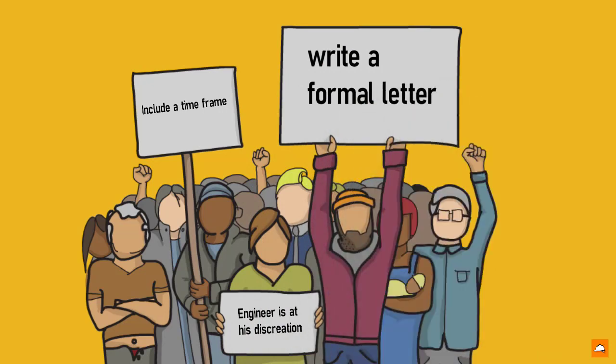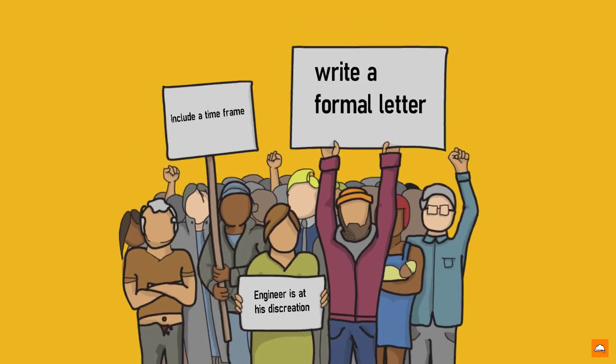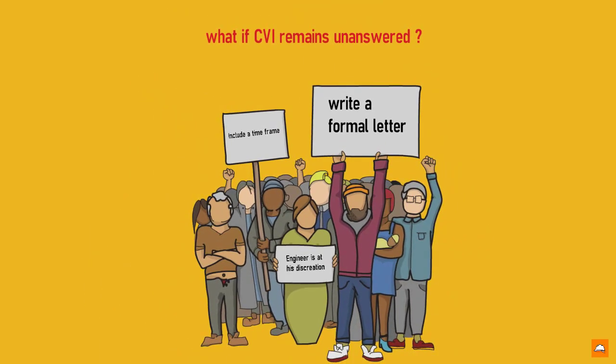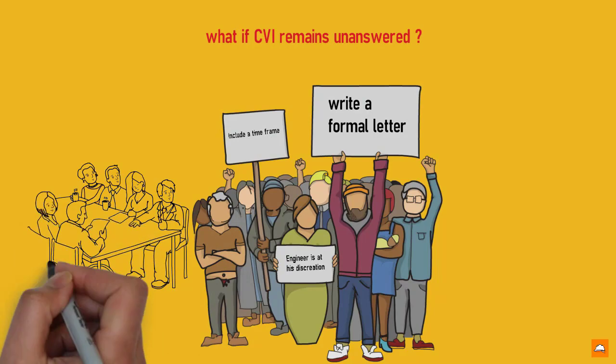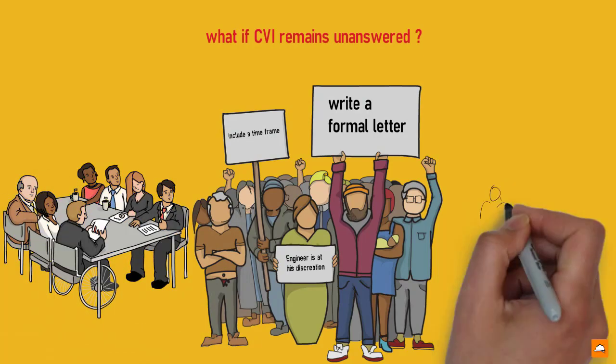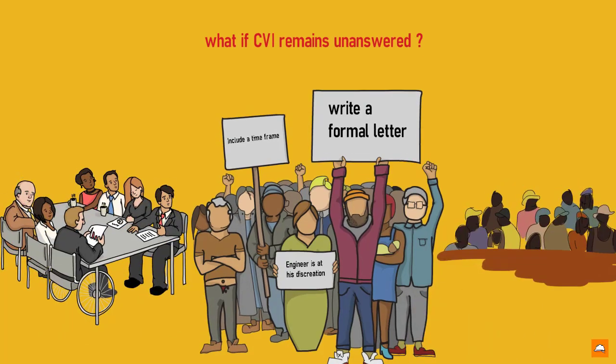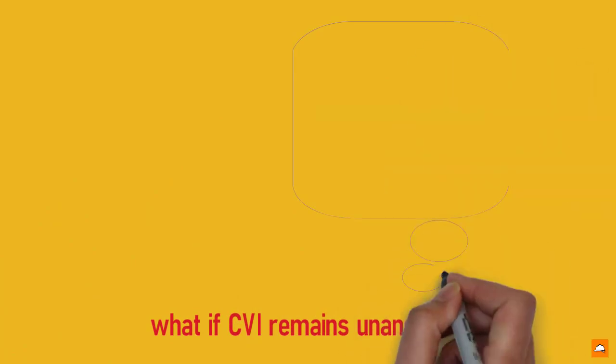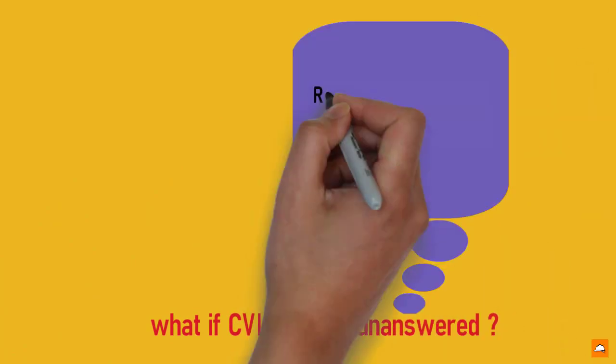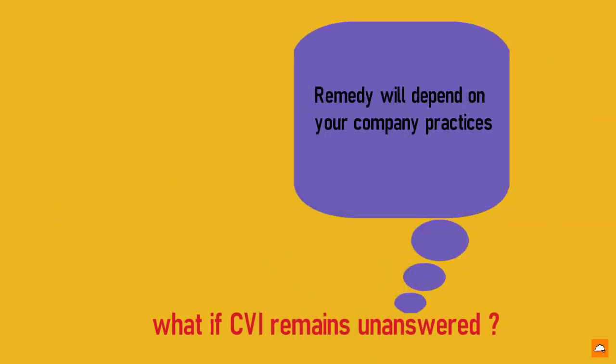Another one could argue, contractor is permitted by contract to communicate with the engineer. Hence, forget about CVI, raise a formal letter to the engineer and ask him to confirm his verbal instructions in writing. All above are fair propositions. Hence, your remedy in situations like this will depend on your company practices.